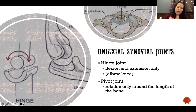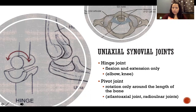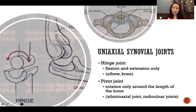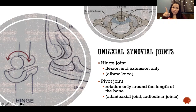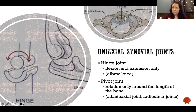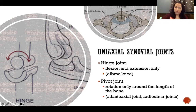Pivot joints only allow rotation around the length of the bone. Examples include the atlantoaxial joint — the articulation between C1 (atlas) and C2 (axis), where the atlas rotates around the dens of the axis — and the superior and inferior radioulnar joints, which rotate to produce pronation and supination of the forearm.